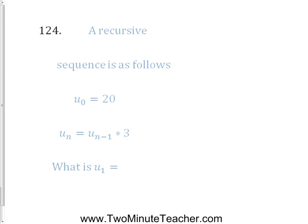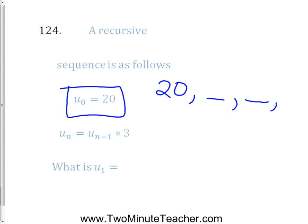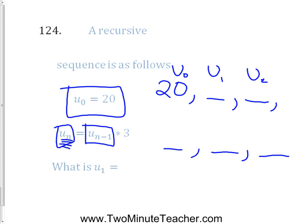A recursive sequence: U sub 0 equals 20, and U sub n equals U sub n−1 times 3. What is U sub 1? U sub 0 means your first term is 20. U sub n refers to any random term on the list. The term right in front of it is U sub n−1, and the term right after it is U sub n+1. So each term equals the one before it times 3.